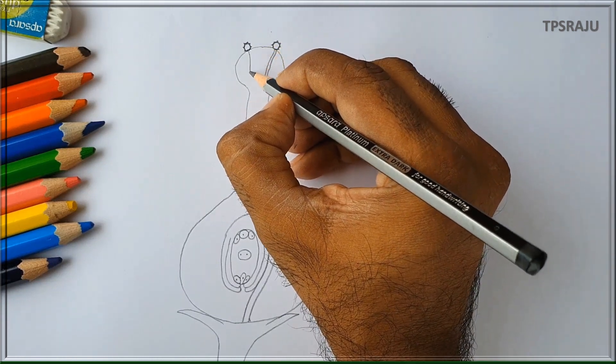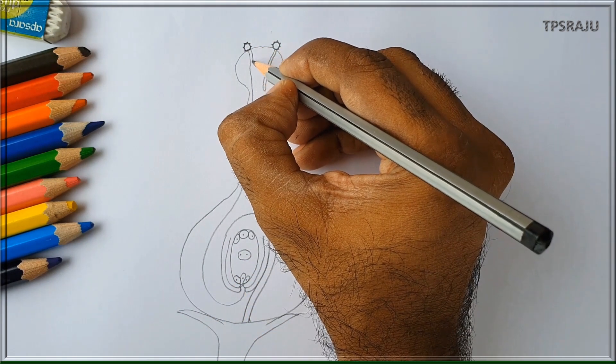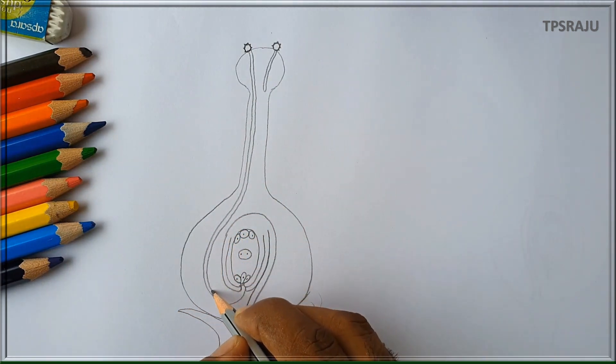Now we are drawing pollen tube which arises from pollen grain. It grows towards the ovary and reaches the ovule. It enters into the ovule through micropyle.